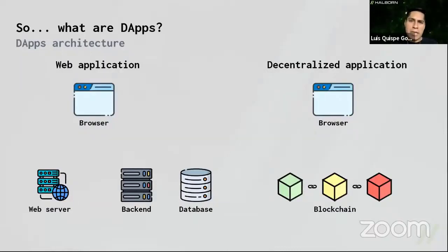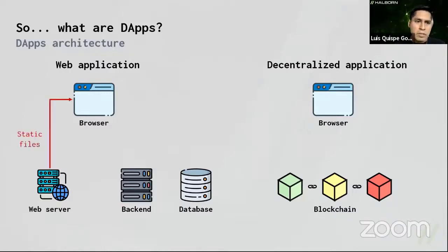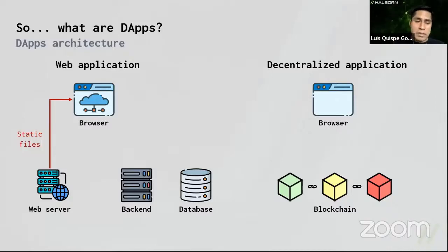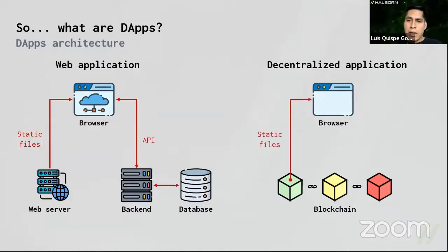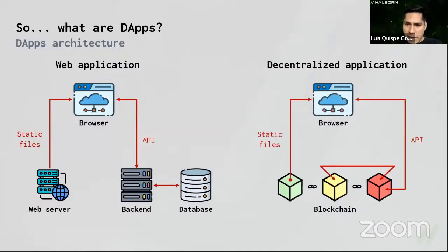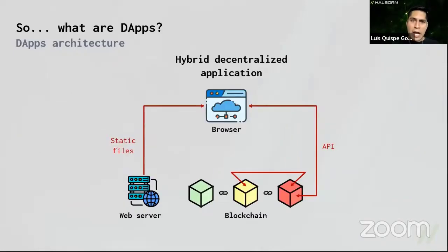Everything sounds great, but how do dApps work internally? Let's look at the architecture. On the left side we have a traditional web application — the browser retrieves static files (HTML, CSS, JavaScript) from a web server, then the browser connects to a backend through APIs, and the backend connects to a database. On the right side, in a dApp, the backend is inside the blockchain. The most used architecture is a hybrid one: static files are retrieved from a web server, but the backend is on the blockchain.